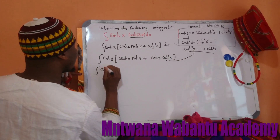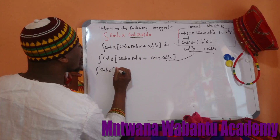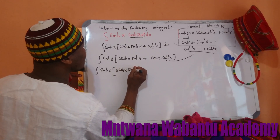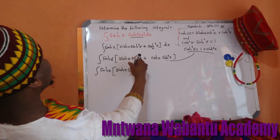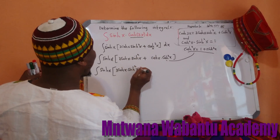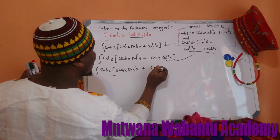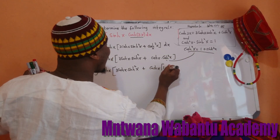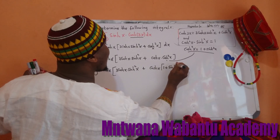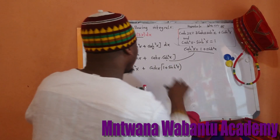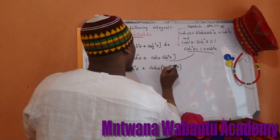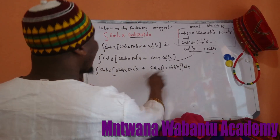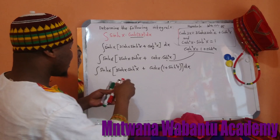So in the integral: cosh(x) times 3cosh²x, plus cosh(x) times the quantity (1 plus sinh²x) in brackets, dx. So I can multiply that out. Let's multiply that out.